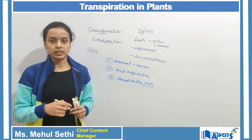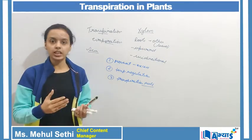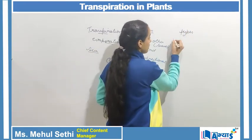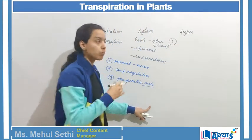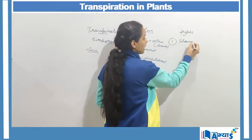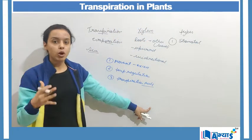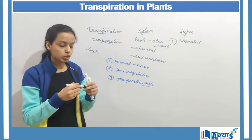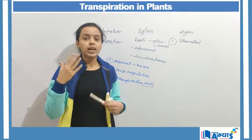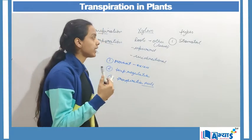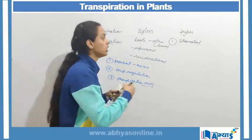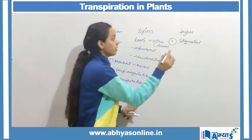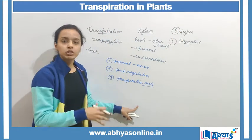Let us now discuss the types of transpiration. The most common type is stomatal transpiration. As the name suggests, stomatal means from the stomata — the small pores on the leaves which help in the exchange of gases. When there is loss of water from the stomata, it is referred to as stomatal transpiration, and this is the maximum among the four types.